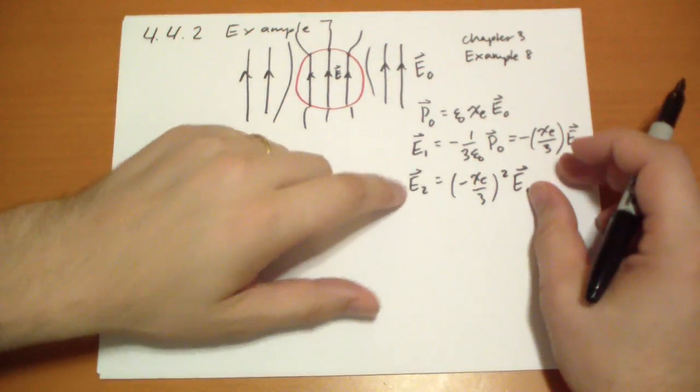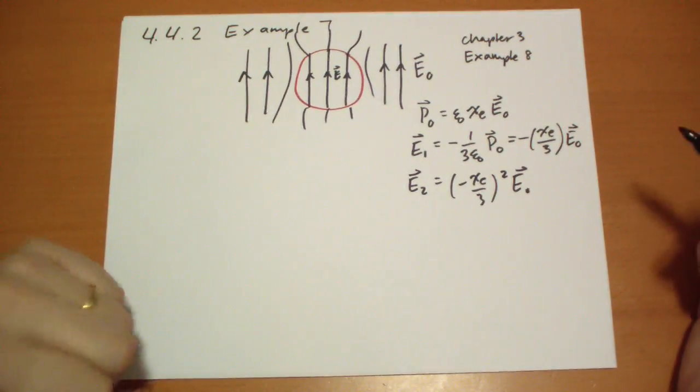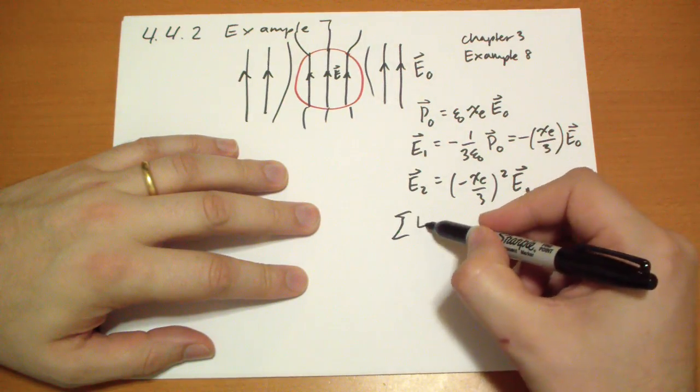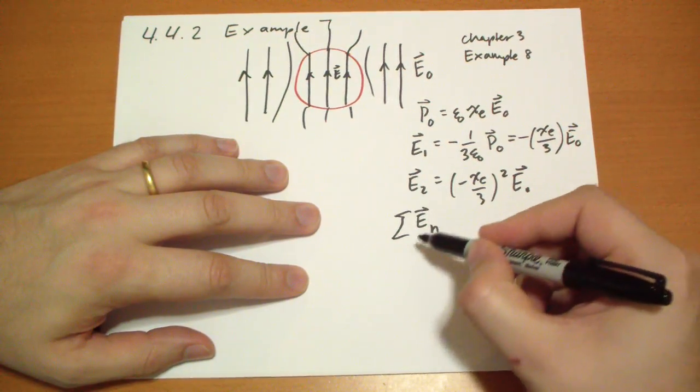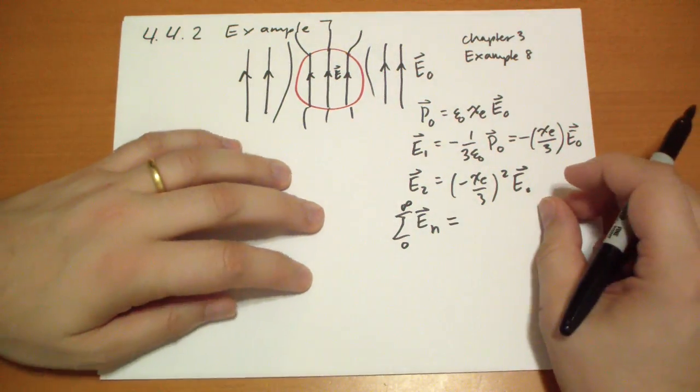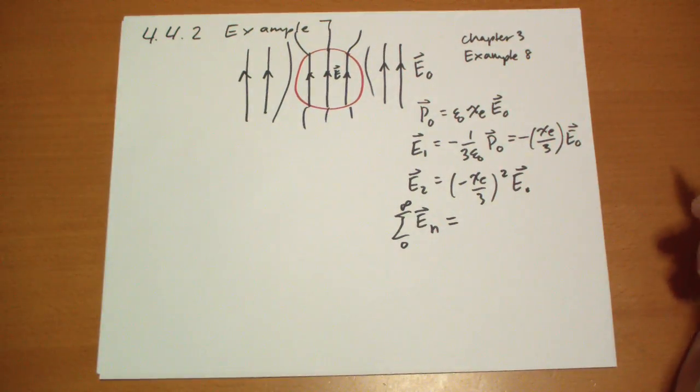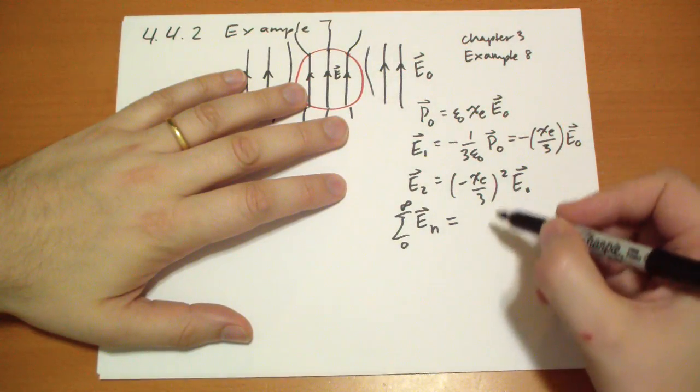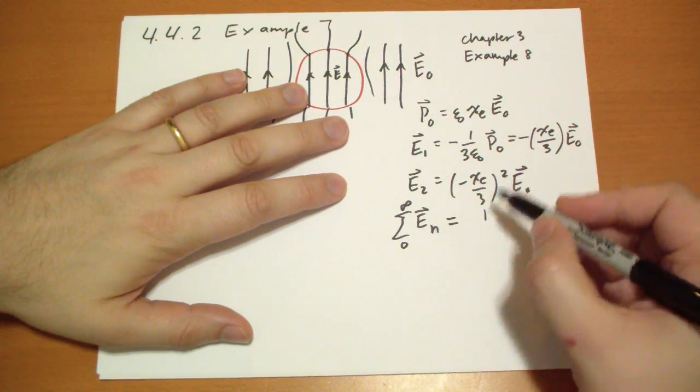And the idea is that you're going to add up all these fields on top of each other using principles of superposition, so we're going to take the sum of all these electric fields from 0 to infinity and we're going to get some answer. Now, looking at this, this is a geometric series where the number itself is less than 1, so we can just apply the simple rule.